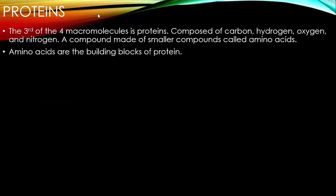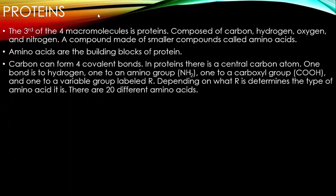Amino acids are the building blocks of protein. Carbon can form four covalent bonds. In proteins, there's a central carbon atom: one bond to hydrogen, one to an amino group (NH2), one to a carboxyl group, and one to a variable group labeled R. Depending on what R is determines the type of amino acid, and there are over 20 different amino acids — so R can stand for over 20 different things.